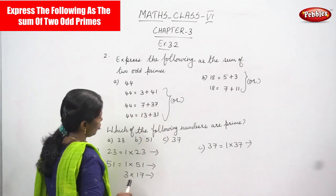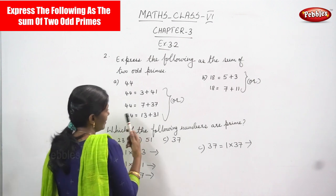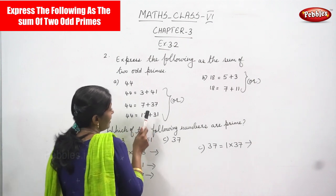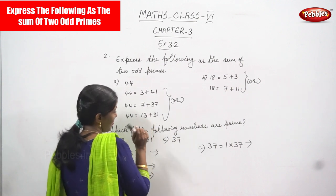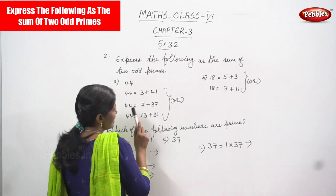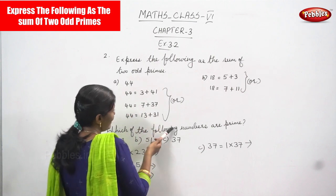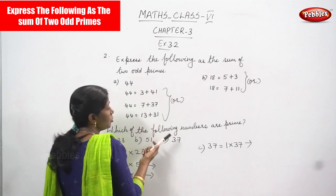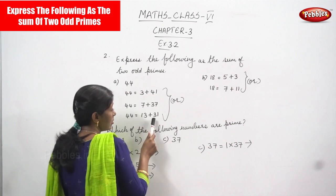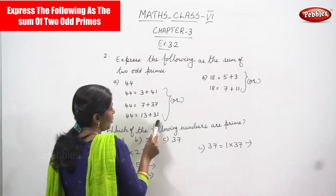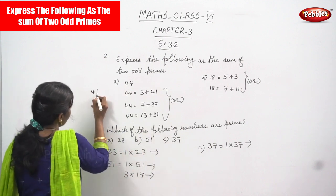Some other odd prime number pairs: 7 is a prime number and 37 is also an odd prime number, so 7 plus 37 gives 44. Next, 13 is an odd prime number and 31 is an odd prime number, so 13 plus 31 also gives 44.